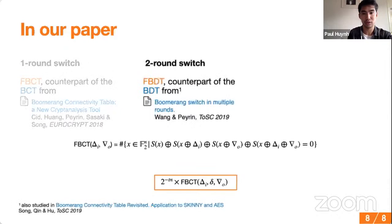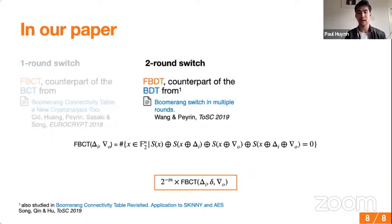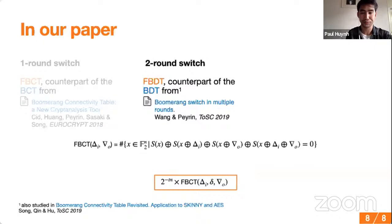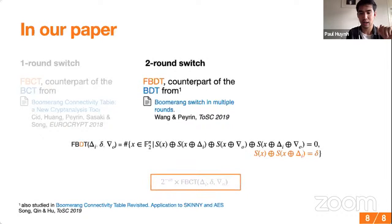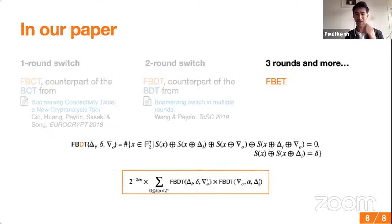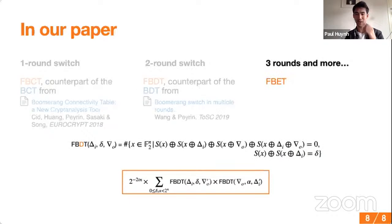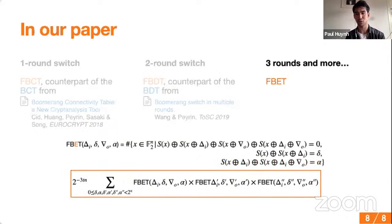We also describe a simple expression for a two-round switch, adding another condition to the FBCT: the output difference between S-boxes. This has already been done for SPNs in two other papers at FSE last year — that was the BDT that Boxin talked about. The idea is to use these on the first and second rounds of your switch to compute the probability. You can extend to three rounds and more by adding an extra parameter, which we call the Feistel Boomerang Extended Table. Here is an example for three rounds. All of this is in our paper. Thank you.